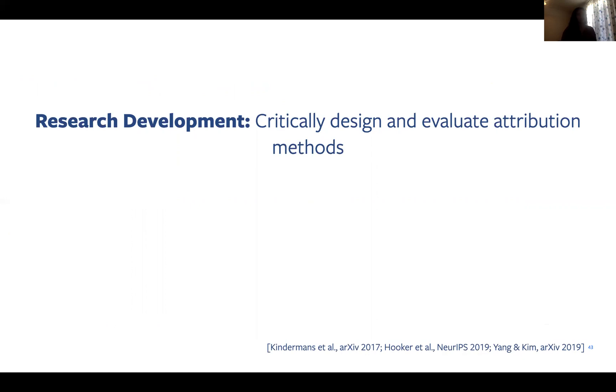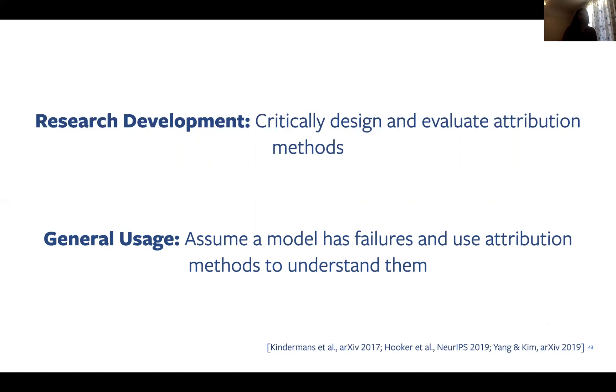Similarly, recent work has also shown that several methods were not sensitive to the model parameters of the model being explained. In this experiment, the authors successively randomized model weights from the end of the network to the beginning and showed that for a few techniques, the visualizations did not substantially change. Taking both of these examples, we noticed that some heat maps tend to be visually appealing, such as some of the ones shown here, but they seem to characterize the content in the image rather than really explaining the prediction of the specific output class or even the model parameters. I suggest two main takeaways from this type of work. The first is for researchers interested in working in this area, and that's the critically designed attribution methods and evaluations to really test that they are indeed characterizing the model's behavior. There have been a few recent works on the evaluation front that are exciting. And the second is for machine learning practitioners. That's to assume that models have failures and to use these heat map methods to understand those failures, not simply to suggest that a model is behaving correctly.